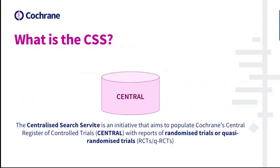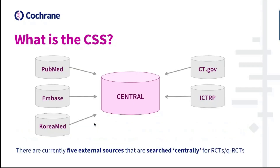So what is the CSS? The Centralised Search Service is an initiative that aims to populate the Cochrane Central Register of Controlled Trials with reports of randomised or quasi-randomised trials. There are currently five external sources that are searched centrally for RCTs or QRCTs. They are NLM's PubMed, Embase owned by Elsevier, CareerMed — a service of the Korean Association of Medical Journal Editors — NLM's ClinicalTrials.gov, and the World Health Organisation's International Clinical Trials Registry Platform, ICTRP.